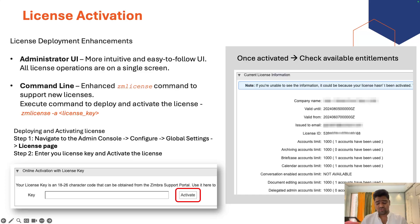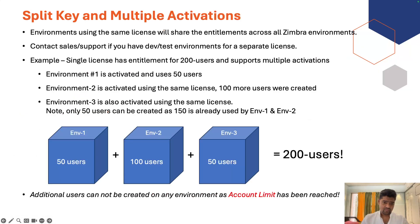License activation: a few enhancements have been made on the admin UI side to make it more intuitive and easy to follow. All license operations are on a single screen now — you don't need to navigate screen to screen for any license-related operations. Split key and multiple activations: this is specifically for BSPs who use the same license on multiple production servers.